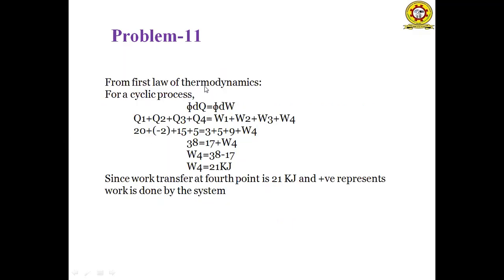From the first law for a cyclic process: σΔQ = σW. So Q1 + Q2 + Q3 + Q4 = W1 + W2 + W3 + W4. Substituting: 20 - 2 + 1.5 + 5 = 3 + 5 + 9 + W4, giving 38 = 17 + W4. Therefore W4 = 21 kJ, meaning work is done by the system at the fourth process.